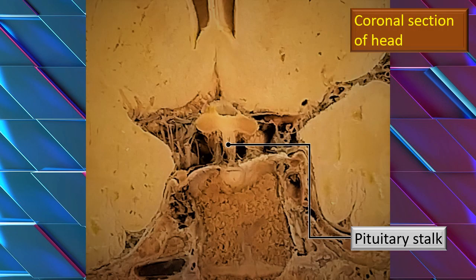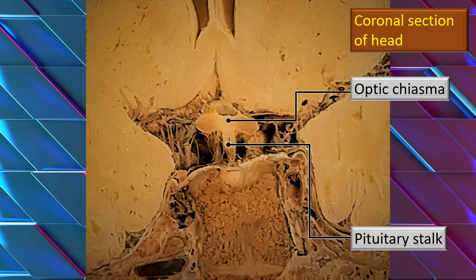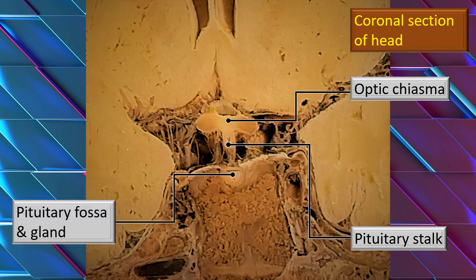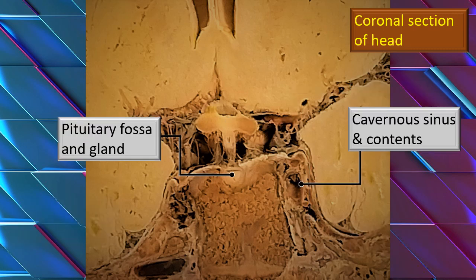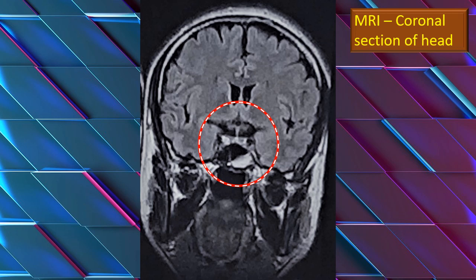Here is the coronal section, passing roughly through the optic chiasma. You can see right behind the optic chiasma is the pituitary stalk. Below that is the pituitary gland and the pituitary fossa right in the middle. On either side of the sphenoid sinus is the cavernous sinus and its contents — namely the internal carotid artery. More on the lateral side are the cranial nerves going towards the orbital cavity: the third, fourth, fifth, and sixth cranial nerves. This is an MRI coronal section; let us re-identify these structures on the imaging specimen.